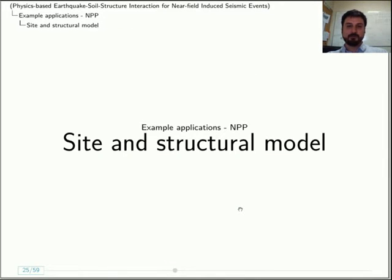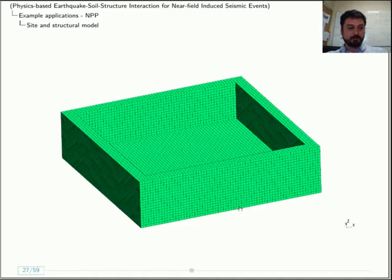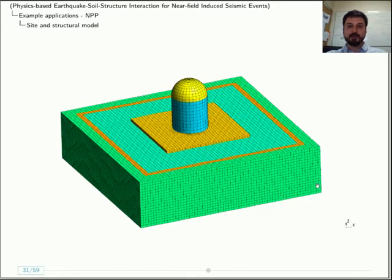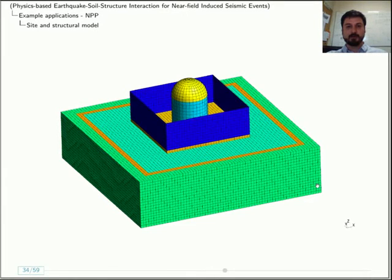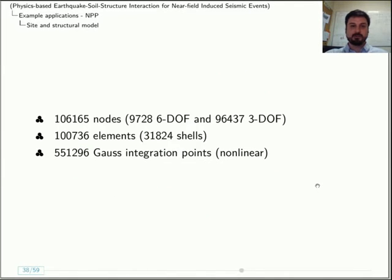Our model of the structure and the site is a generic model. It's meant to represent a generic nuclear power plant, not a particular one. To start with DRM modeling, what you need to do is separate your site into a DRM layer and an interior site, and you put some extra elements outside to absorb this outgoing radiation. On top of that, you can build your nuclear power plant. This model that I'm showing here consists of about 100,000 nodes, 100,000 elements and like 500,000 Gauss integration points.